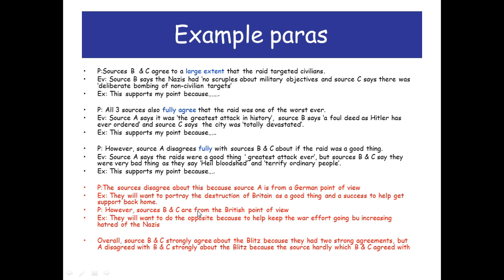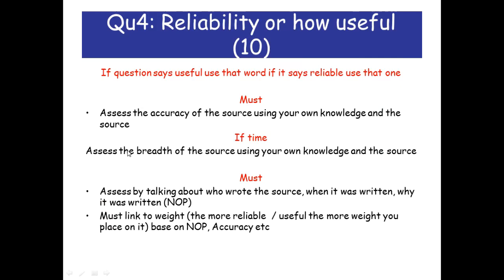Now we talk about sources B and C. Sources B and C are from the British point of view — they will want to do the opposite to help keep the war effort going and increase hatred of the Nazis. Then a simple one-line conclusion: overall, sources B and C strongly agree about the Blitz. But source A disagreed with B and C strongly about the Blitz. For the conclusion, just sum up why the sources agree or disagree and give brief reasons as to the nature of the sources.